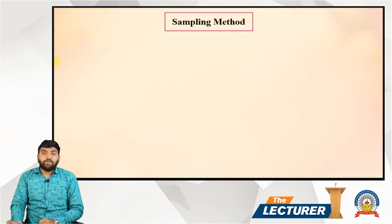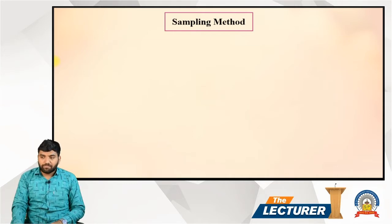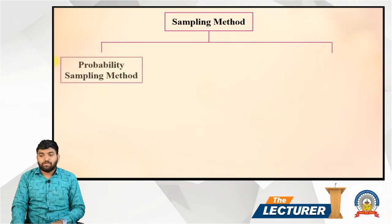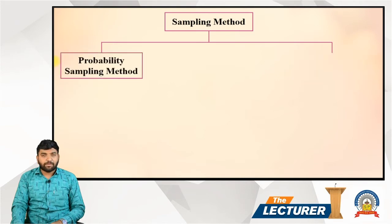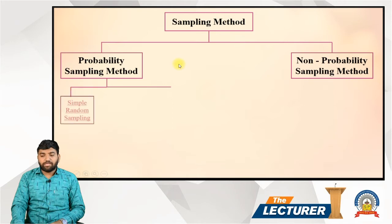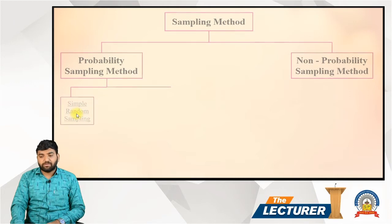Now we are moving on to sampling methods. There are two main types: the first one is probability sampling, and the second one is non-probability sampling. Within probability sampling, one important technique is simple random sampling. Let's see what simple random sampling means.